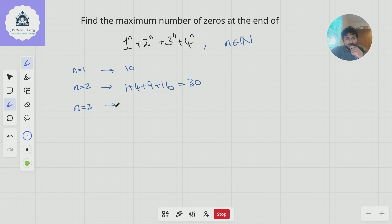For n=3, we get 1³ + 2³ + 3³ + 4³, which is 1 + 8 + 27 + 64. This works out to be 100, which is also 10². That ends in two zeros.